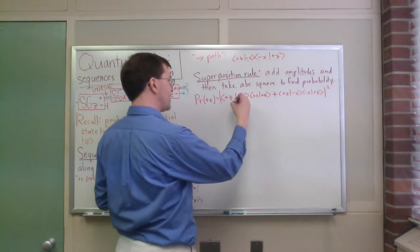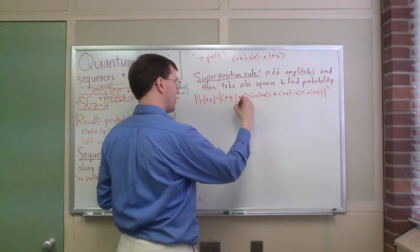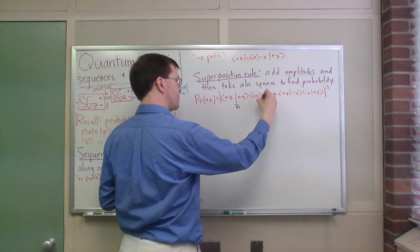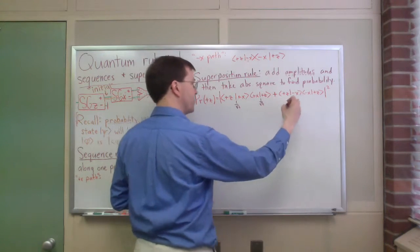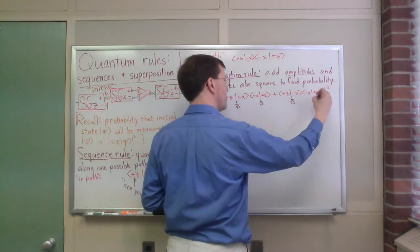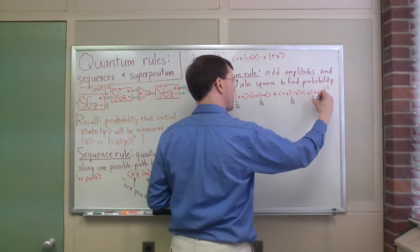But I'll tell you, this bracket comes out to be one over square root of two. This bracket comes out to be one over square root of two. This is one over square root of two. And this is one over square root of two.